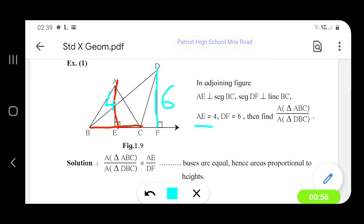This is equal to 4 and DF is equal to 6. Then find the ratio, area triangle ABC upon area triangle DBC, area triangle DBC.